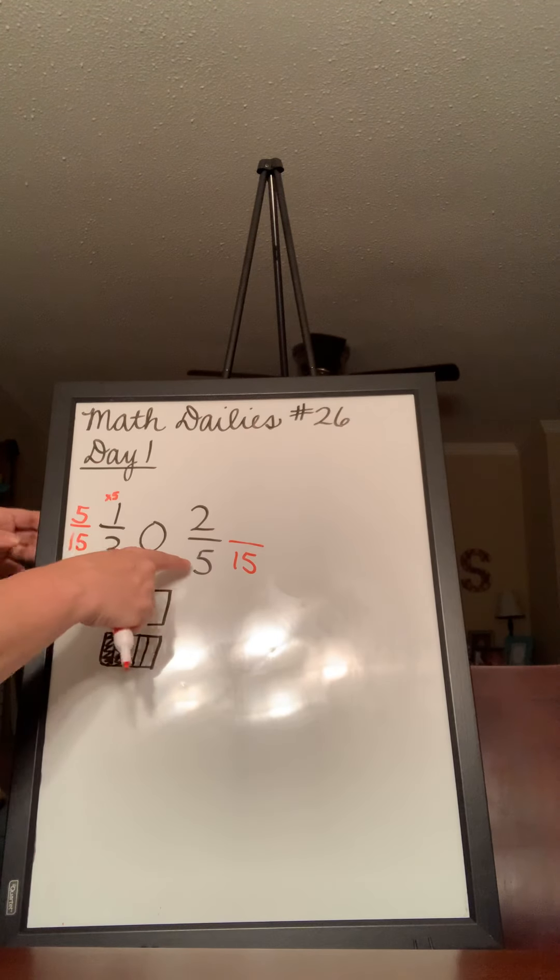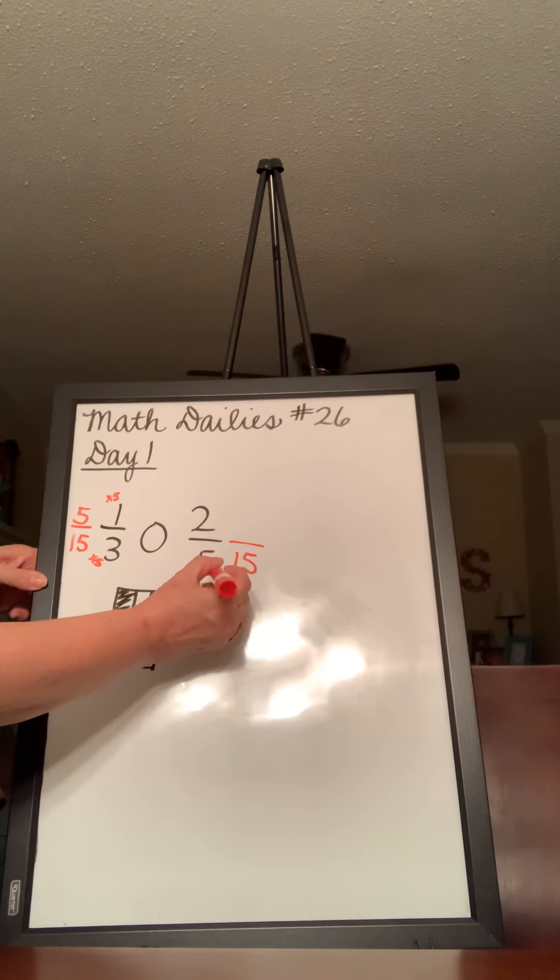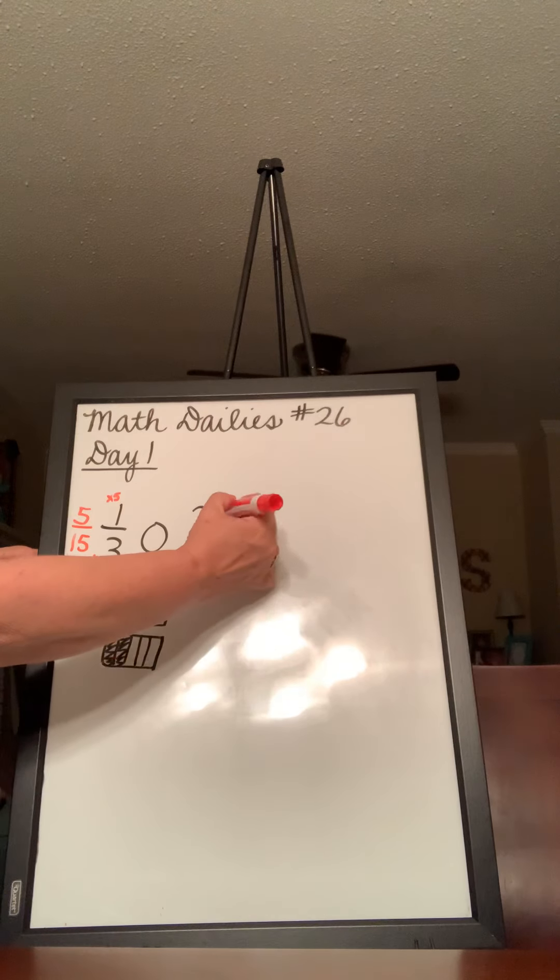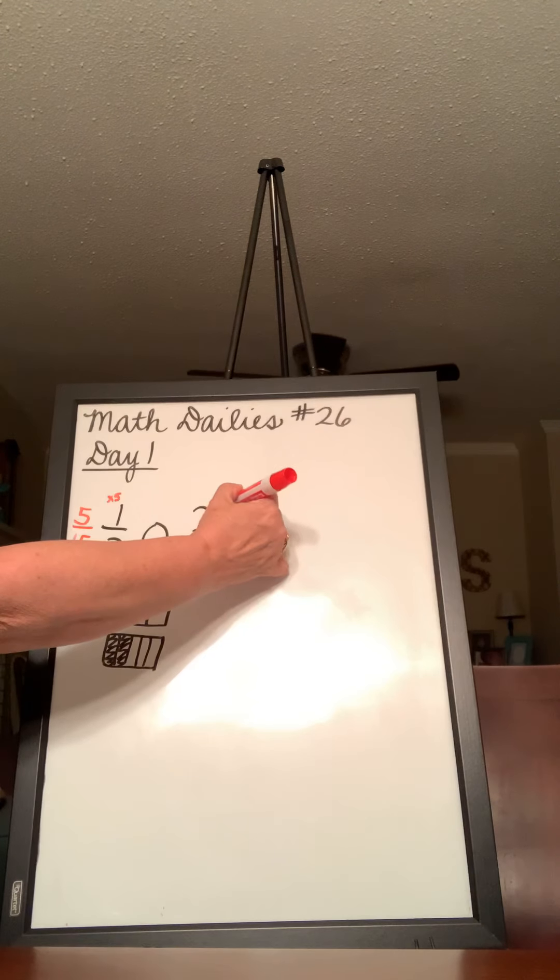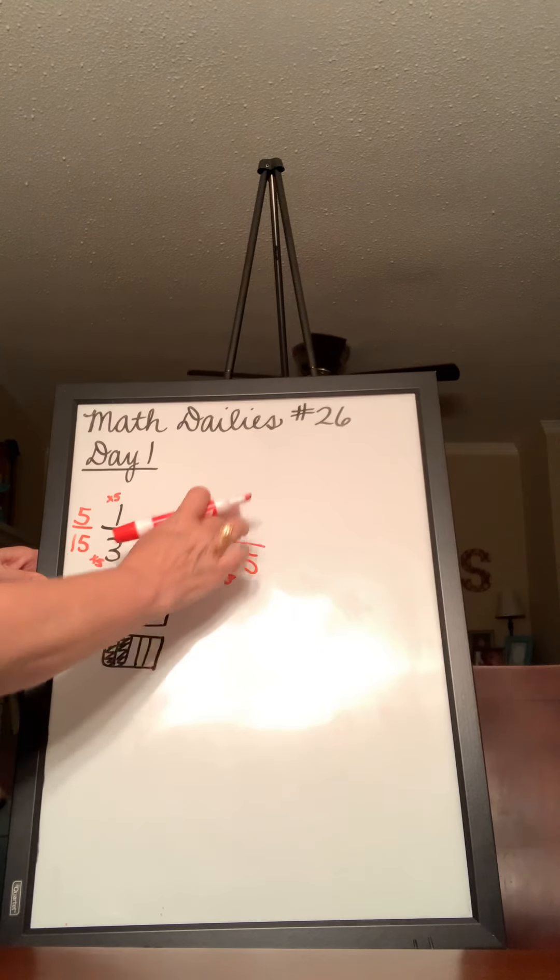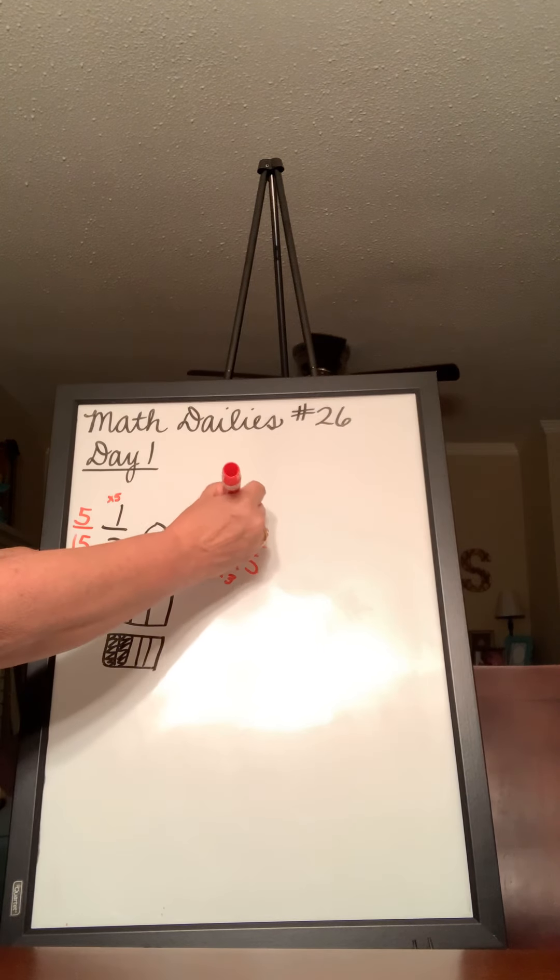Now, we can do the same thing with 2/5. 5 times blank is 15, times 3. That's how we get to 15. So, we multiply the bottom by 5... we also have to multiply the top. I mean by 3, I'm sorry. If we multiply the bottom by 3, we also have to multiply the top by 3, still thinking of my 5 from over here.